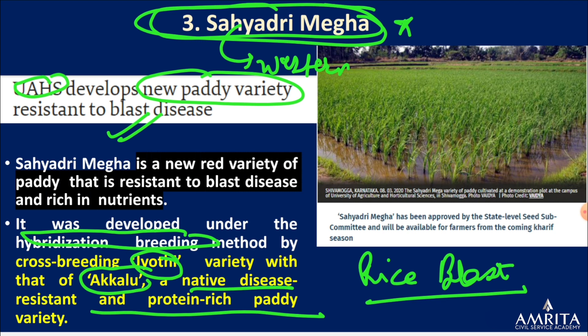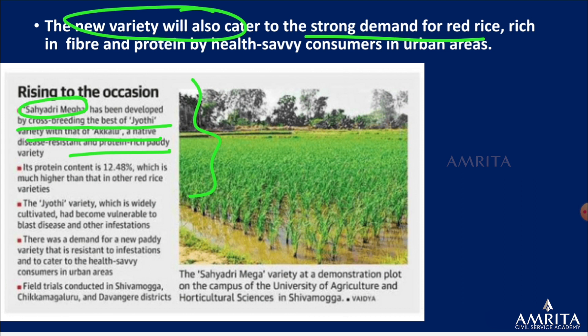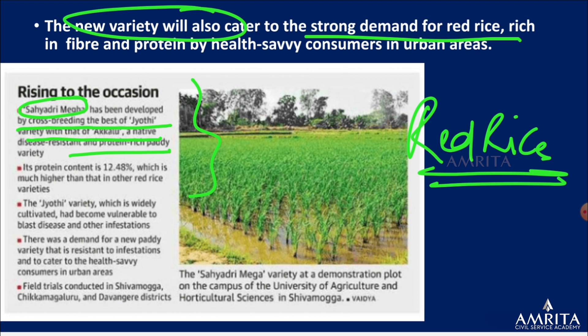Hybridization of these two varieties has produced a novel variety resistant to blast disease. It got approval of the state-level subcommittee and seeds will be available to farmers soon. Sahayadri Mega was developed by cross-breeding the best of Jyoti and Akula. The new variety will cater to strong demand for red rice, which is rich in fiber and protein.